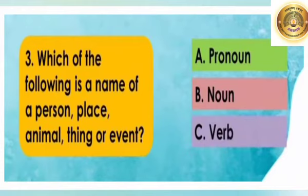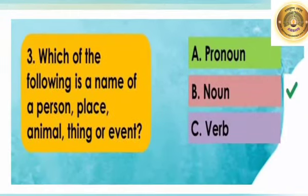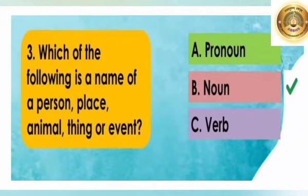Which of the following is the name of a person, place, animal, thing or event? A. Pronoun, B. Noun, C. Verb. Yes, right. B. Noun.